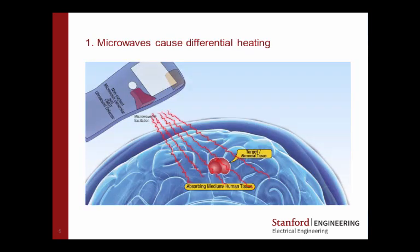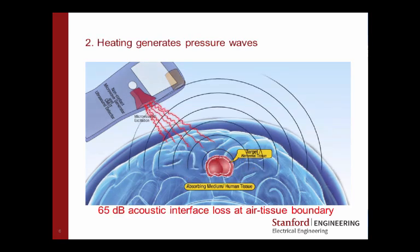So first some microwave excitation would hit maybe some abnormal tissue with dielectric contrast to the surrounding healthy tissue and cause differential heating and expansion, and that differential heating and expansion then causes some pressure wave at ultrasound frequencies that can then propagate out through the air-tissue interface through the air to a detector at a standoff. Now one of the critical challenges for non-contact detection becomes the acoustic impedance mismatch between human tissue and air, where we see a 65 dB acoustic interface at that air-tissue boundary. That means we're detecting very small pressures that have been attenuated by that boundary.